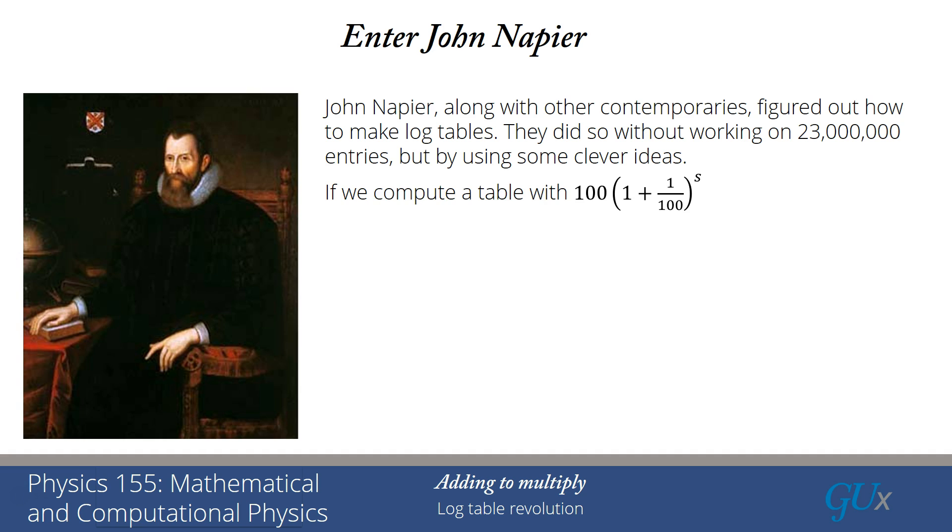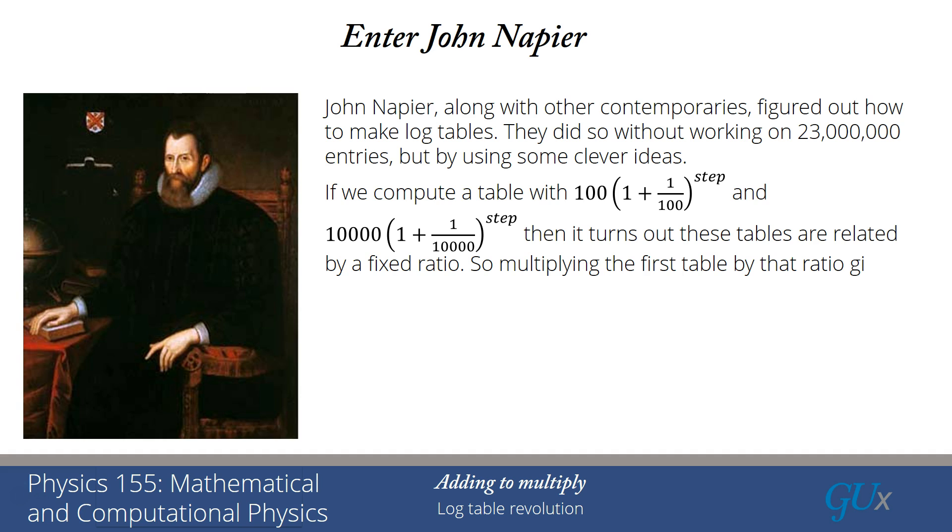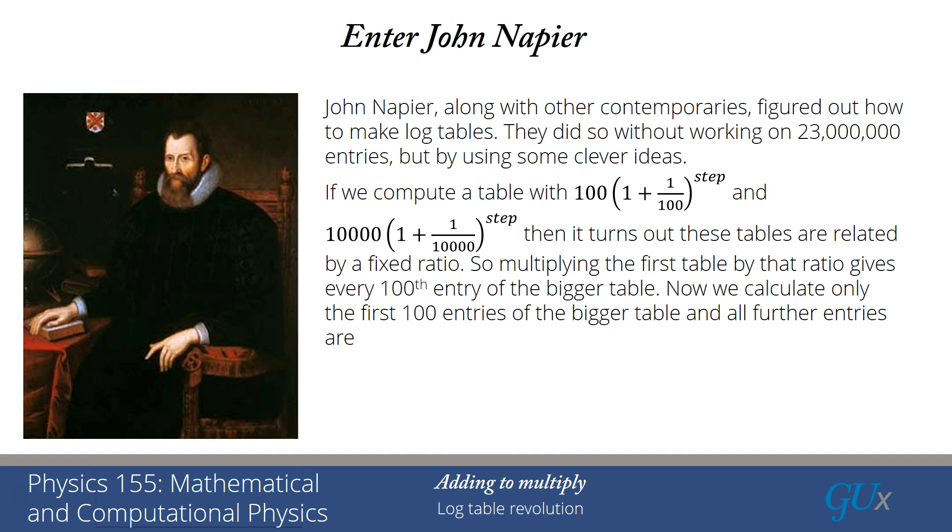So the first thing to note is if I computed a table with a step given by 100 times (1 plus 1 over 100), and I looked at all of those steps, and I wanted to use that data for a step made with 10,000 multiplied by (1 plus 1 over 10,000) raised to a step, it turns out that these two tables are related by a fixed ratio.